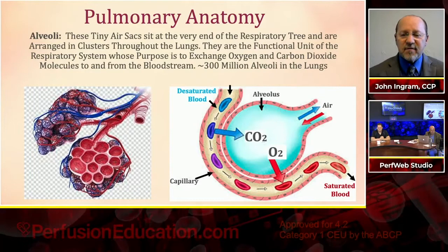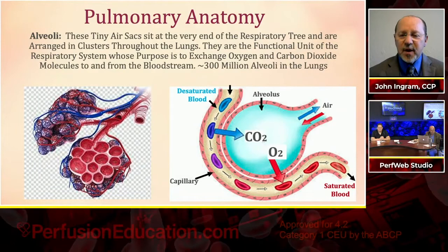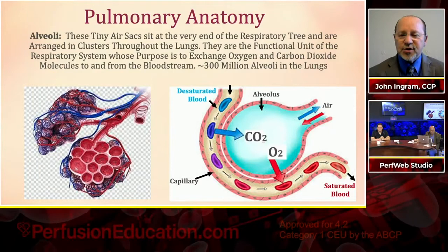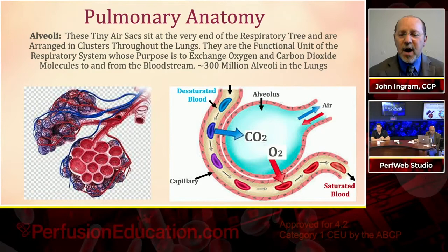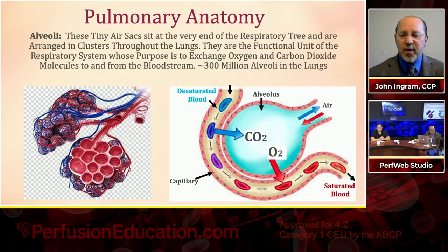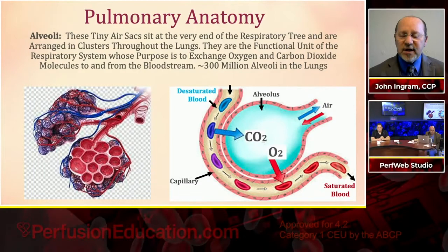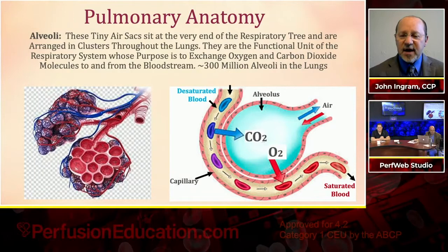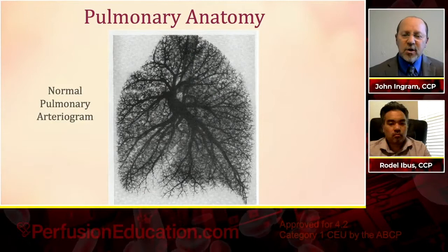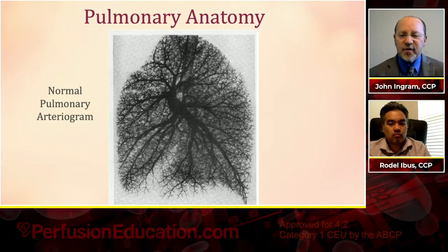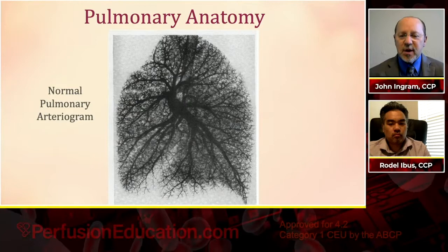The alveoli are tiny air sacs at the very end of the respiratory tree, arranged in clusters throughout the lungs. They are the functional unit of the respiratory system, whose purpose is to exchange oxygen and carbon dioxide to and from the bloodstream. There are about 300 million alveoli in our lungs. Deoxygenated blood comes into the capillary against the air sac, releases carbon dioxide, gains oxygen, and leaves as oxygenated, saturated blood. Here's a pulmonary arteriogram showing the incredibly vast network of blood vessels supplying the pulmonary anatomy.